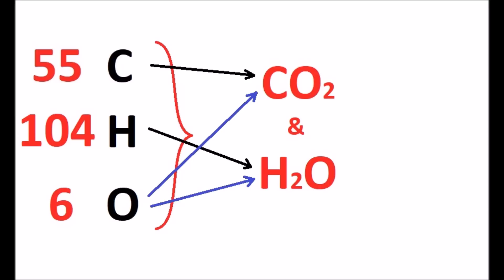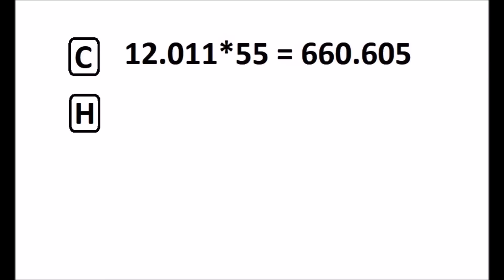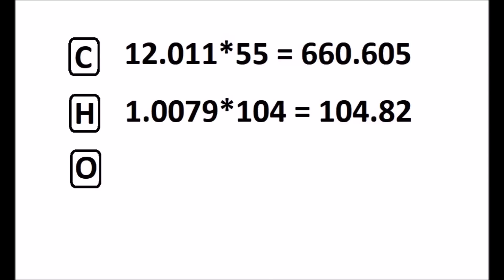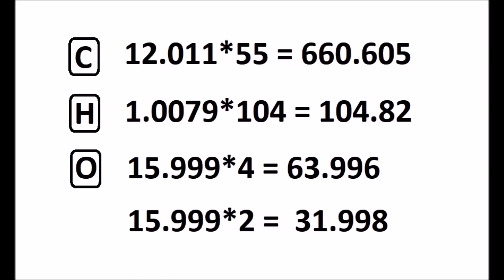So let's do this. Carbon has the atomic weight of 12.011, multiplying it by 55 gives us 660.605. Similarly, we have hydrogen with atomic weight of 1.0079 multiplied by 104 gives us 104.82. Those six oxygen atoms has a different case. Four of them will go from CO2 and two of them will go from H2O. So taking that into consideration, 15.99, which is the atomic weight of oxygen, multiplied by 4 gives us 63.998 will go with CO2, and 15.99 into 2, that is 31.998, will go and form H2O.